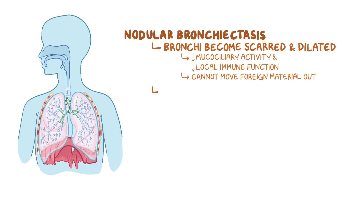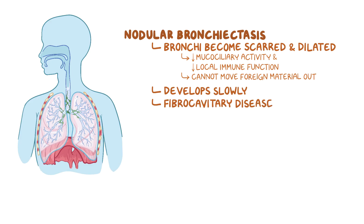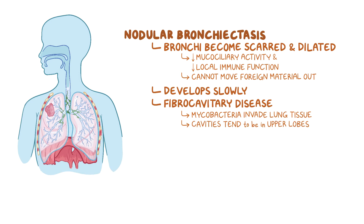Nodular bronchiectasis tends to develop slowly, but in some cases the more aggressive and severe fibrocavitary disease occurs. Here, the mycobacteria invade the lung tissue, causing damage, severe fibrosis, and formation of cavities, much like tuberculosis. Since MAC are aerobic organisms, these cavities tend to be in the air-rich upper lobes of the lung.